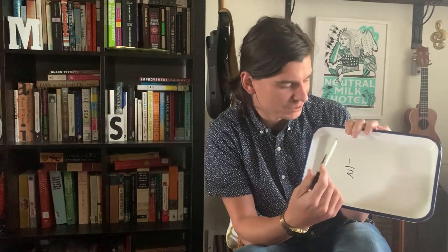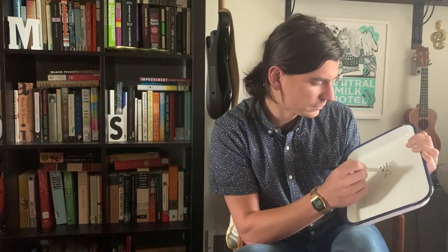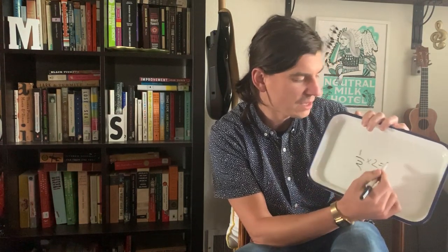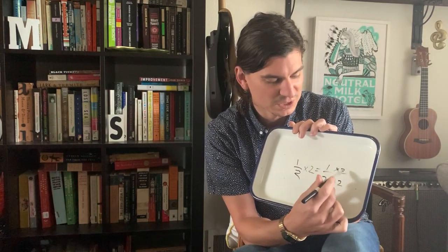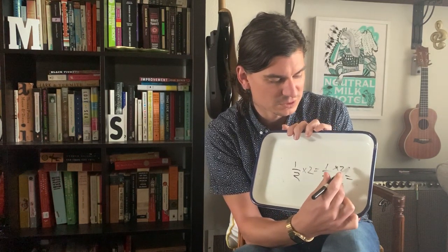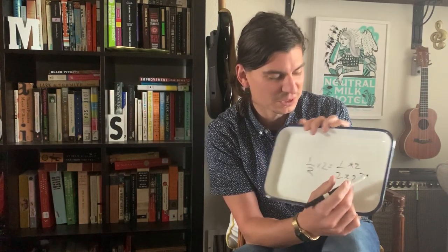You can make any equivalent fraction by just multiplying by the same number, because whatever you do to the numerator has to be done to the denominator. I'm going to multiply this one half by two — so one numerator times two, and the denominator is also being times two. One times two equals two for our new numerator, and two times two equals four.